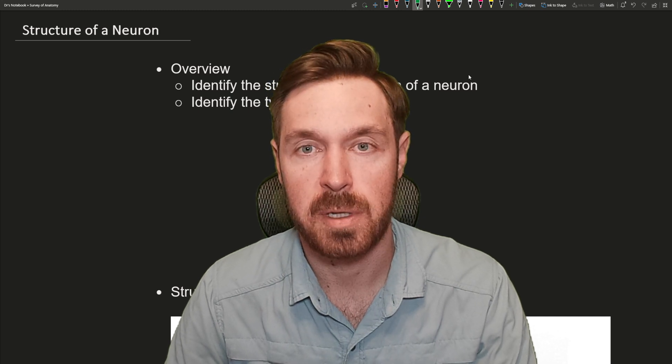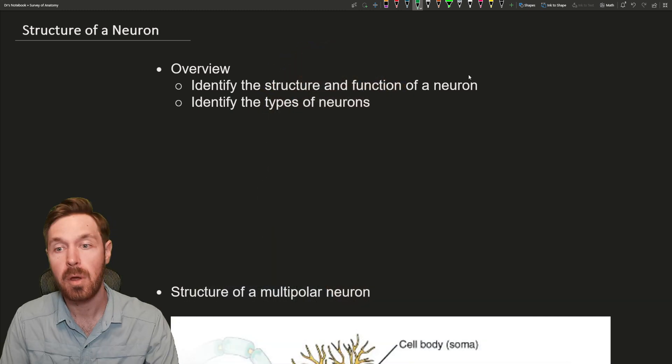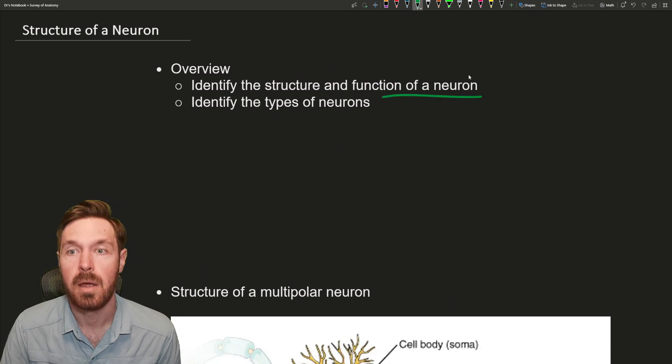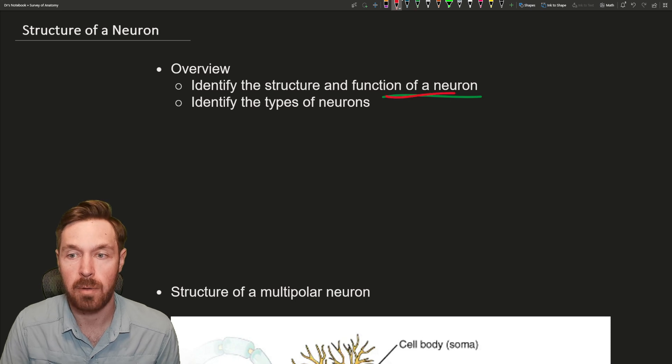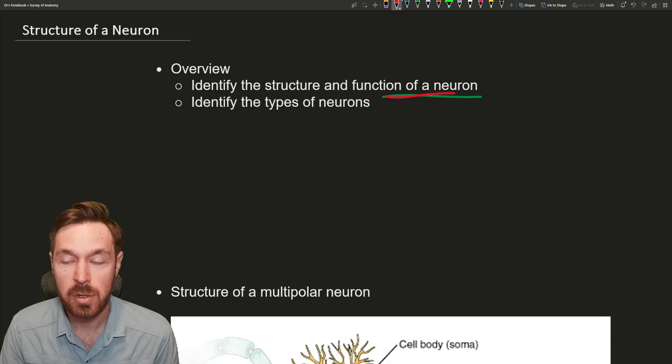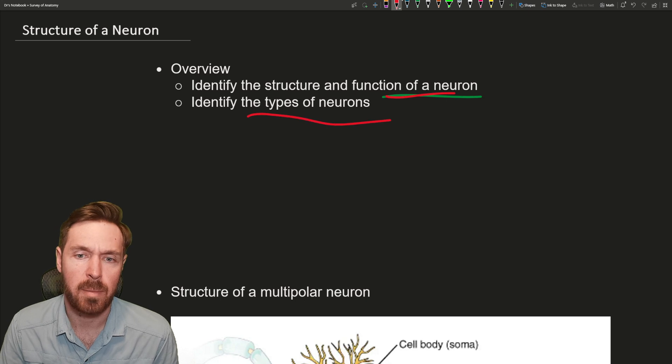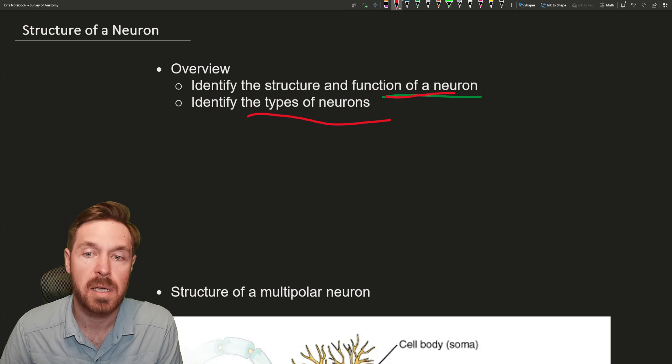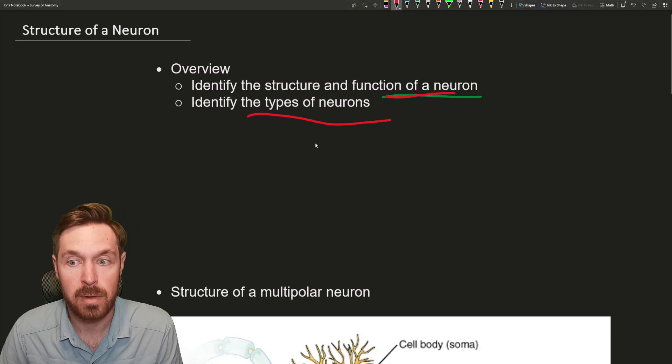In the following video, the one after this one, we're going to be going over an action potential. To understand an action potential, we have to understand the structure and function of a neuron. We'll also briefly mention there are three types of neurons and we'll be able to identify those and where we can find them as well.